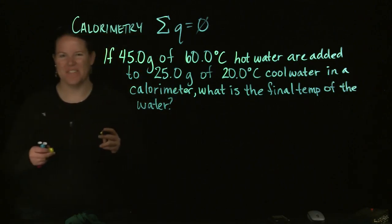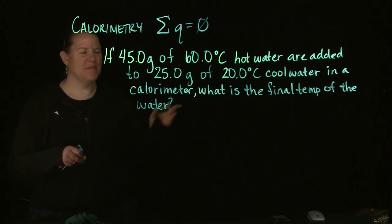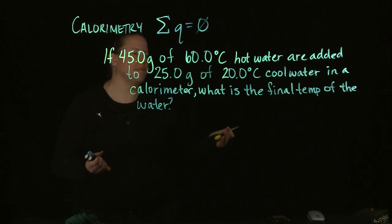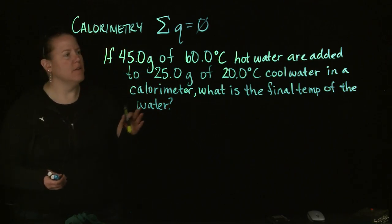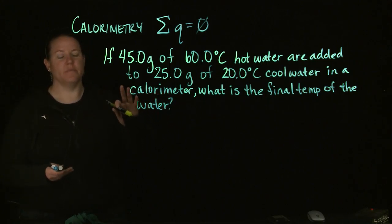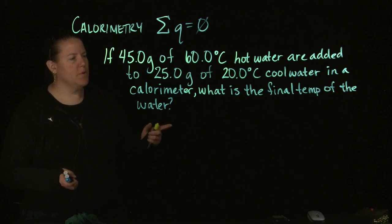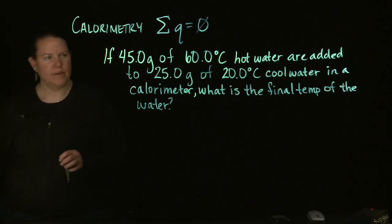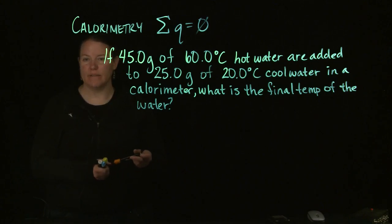Is that a lovely problem? If 45 grams of 60 degree hot water is added to 25 grams of 20 degree Celsius cool water in a calorimeter. What is the final temperature of the water? That is a fascinating question.